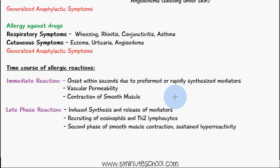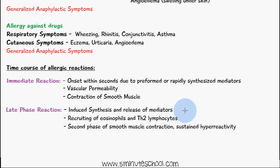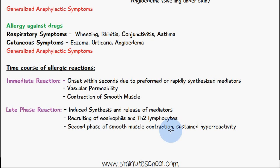The response is also vascular permeability and contraction of smooth muscle. The late phase of the allergic reaction involves induced synthesis and release of these mediators again, and a recruiting of eosinophils and Th2 lymphocytes, resulting in a second phase of smooth muscle contraction and sustained hyper-reactivity.